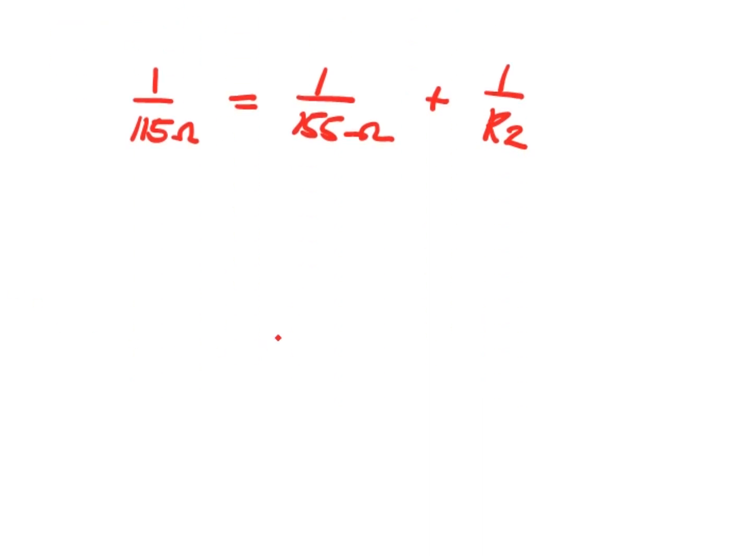By simplifying this equation, we rearrange to get 155 R2 over (R2 plus 155) on one side, which equals 1 over 115.